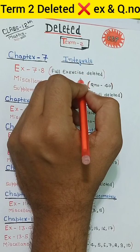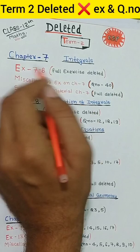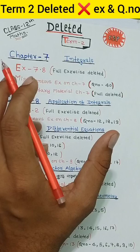Chapter 7, Integrals. Exercise 7.8 is deleted and not required in term second. This is miscellaneous, the last exercise. Question number 14 in supplementary material is not required, on the last page in the second book. Chapter 7 is in the second book. Full exercise is not required.